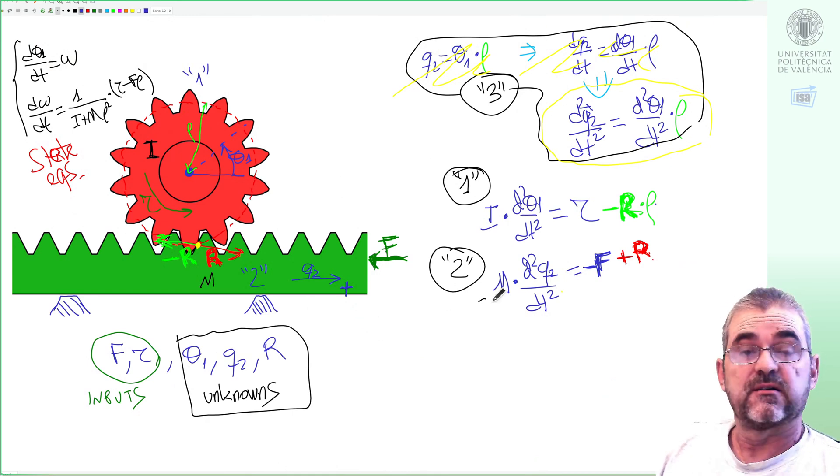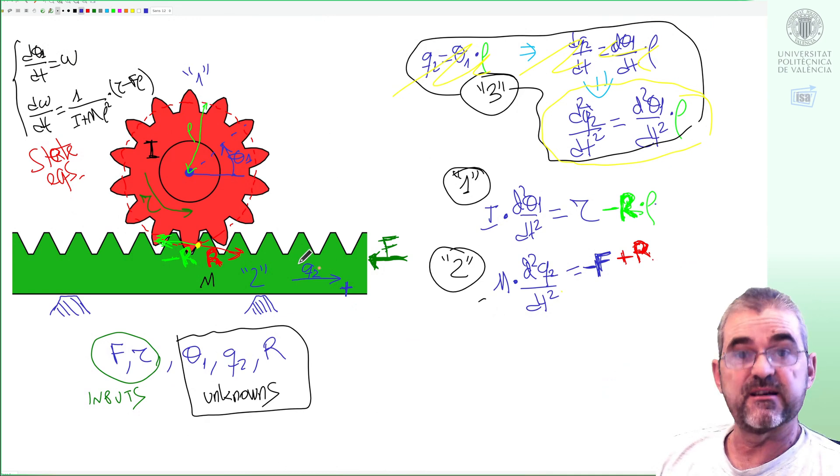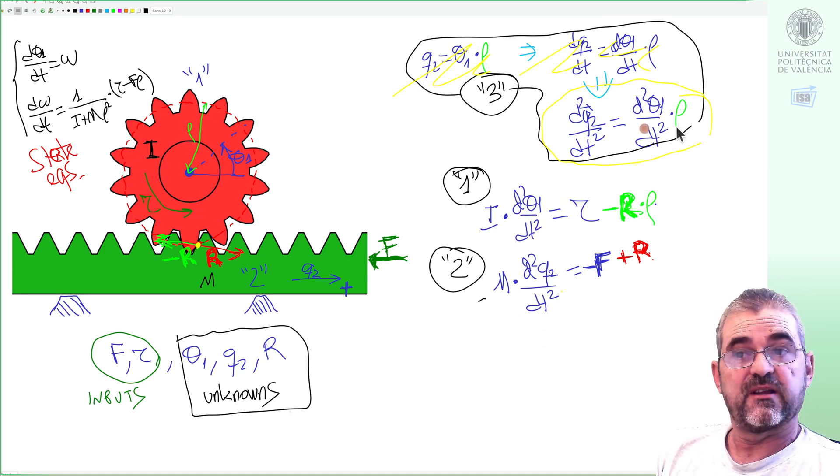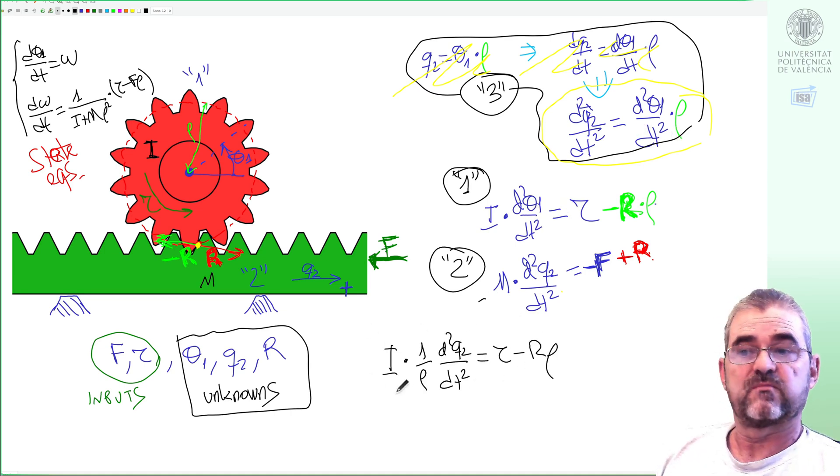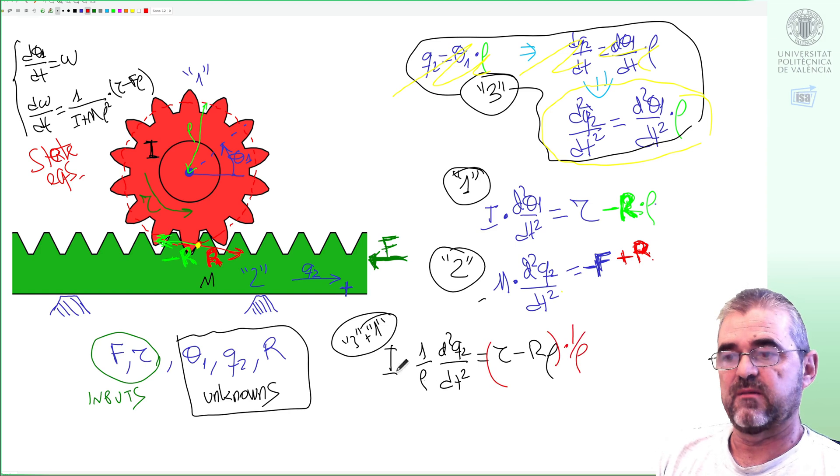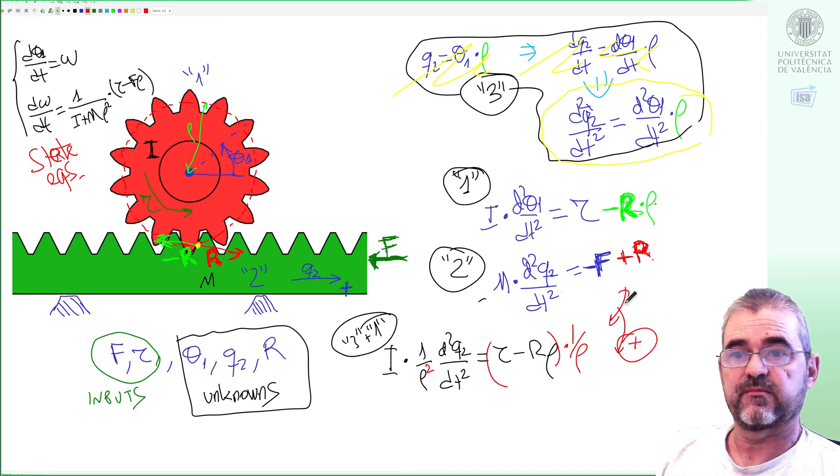If we now quickly do the reduction to the linear movement eliminating theta one and reaction force, then I will replace equation three in one to get this. And then as I am looking to eliminate reaction force I will divide by rho both sides so that when I add up these two equations.